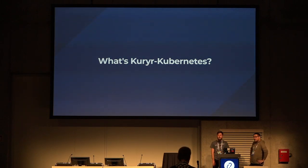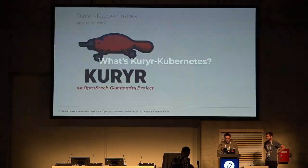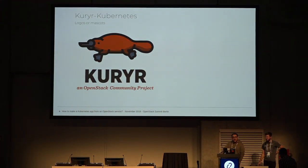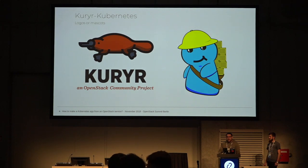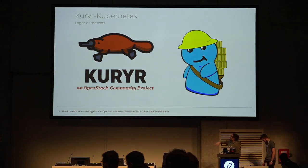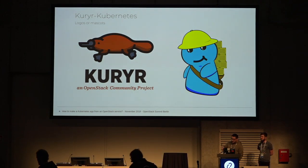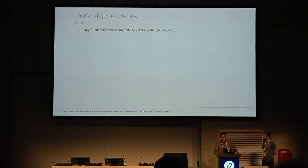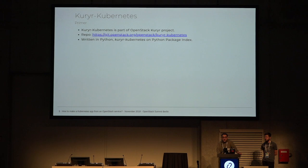Daniel will tell you about what Kuryr Kubernetes is. So first, let me introduce our awesome pet - this is the Platypus. There are some funny rhymes with the name in Spanish. Kuryr means originally in Czech 'courier', because we are mainly translating container stuff from one part to another. Kuryr Kubernetes is, of course, an OpenStack project. We have several repos, and we do the main development on the kuryr-kubernetes repo, packaged on the Python Package Index.